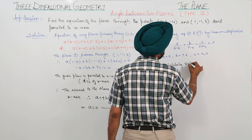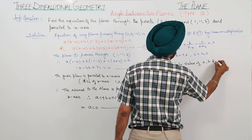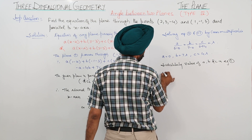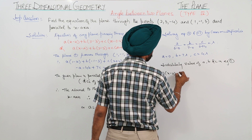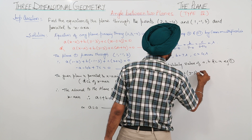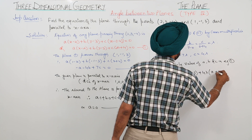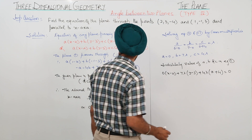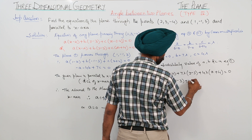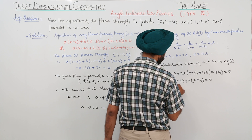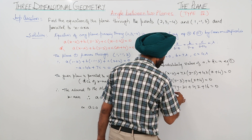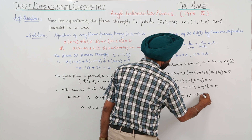Substituting the values of a, b, and c into Equation 1: 0·(x - 2) + 7λ(y - 3) + 4λ(z + 4) = 0. Dividing by λ: 7(y - 3) + 4(z + 4) = 0, which expands to 7y - 21 + 4z + 16 = 0. Therefore, the equation of the plane is 7y + 4z - 5 = 0.